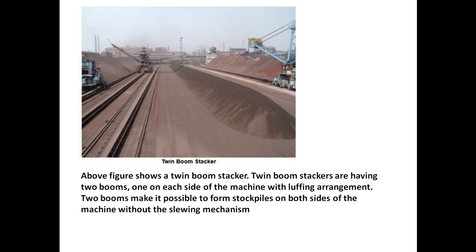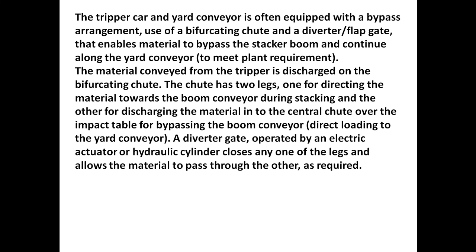A twin boom stacker has two booms, one on each side of the machine, with a luffing arrangement. Two booms make it possible to form stockpiles on both sides of the machine without a slewing mechanism. The tripper car and yard conveyor are often equipped with a bypass arrangement using a bifurcating chute and a diverting flap, enabling material to bypass the stacker boom and continue along the yard conveyor to meet plant requirements. Material from the tripper is discharged onto the bifurcating chute, which has two legs — one directing material toward the boom conveyor during stacking, and another for discharging material into the central chute for bypassing. The diverting head is operated by an electric actuator or hydraulic cylinder to open one of the legs and allow material to pass through.